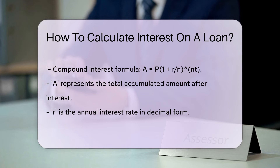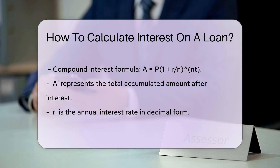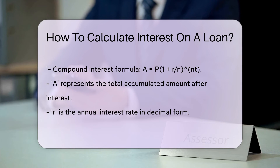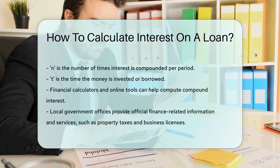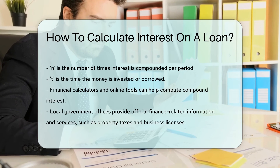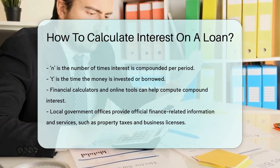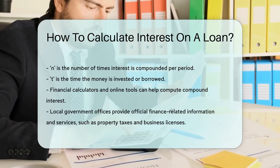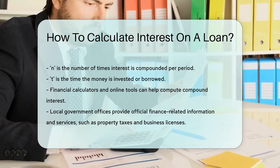For compound interest, the formula gets a new twist: A = P(1 + r/n)^(nt). Here, A is the amount of money accumulated after n periods, including interest. P is the principal amount. R is the annual interest rate as a decimal. N is the number of times that interest is compounded per period. And T is the time the money is invested or borrowed for.